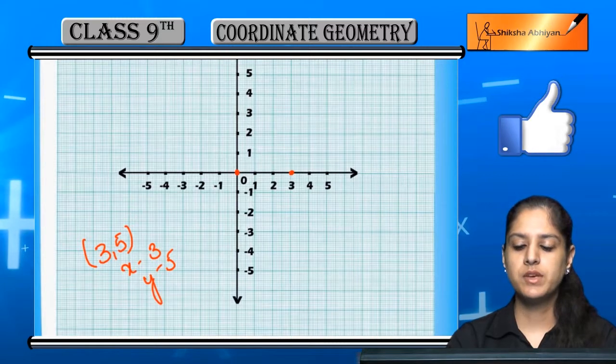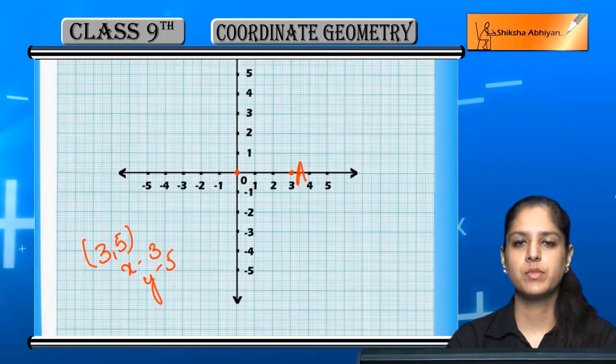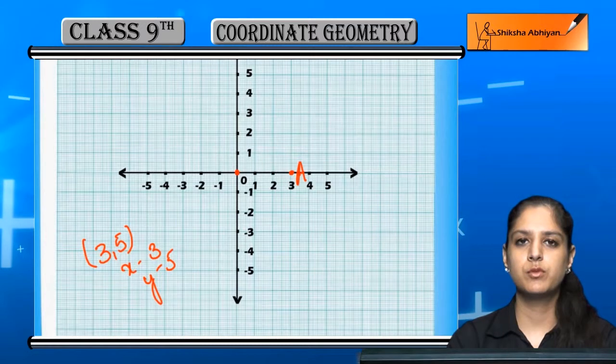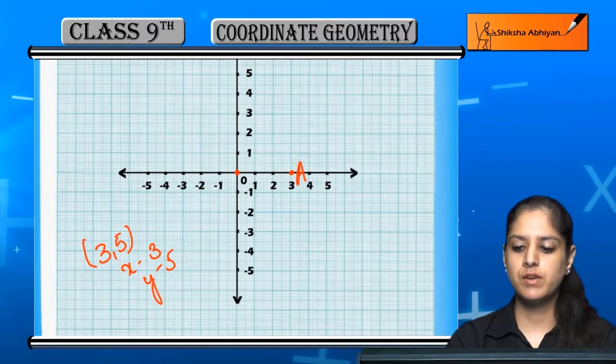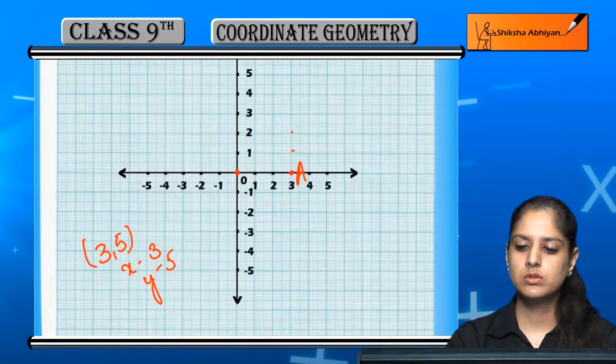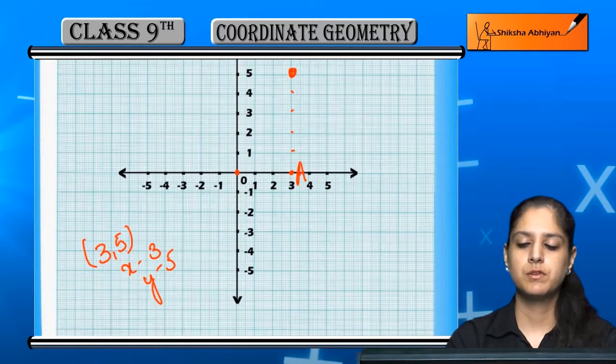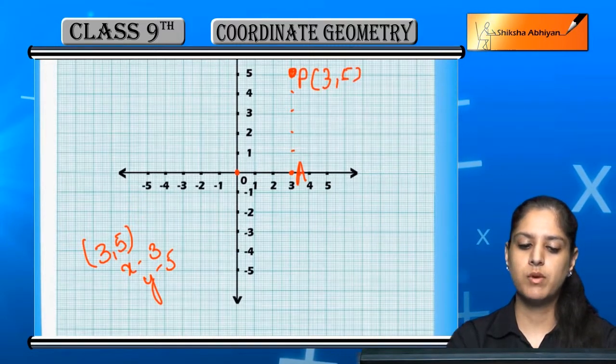Ab yahan se hame move karenge, maine mark kar liya point. Y ki taraf move karenge. Y kya hai? Plus 5. Plus 5, upar ki taraf hai. 1, 2, 3, 4, 5 points count karke.